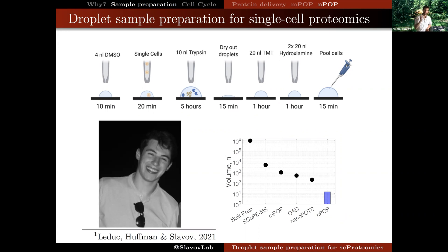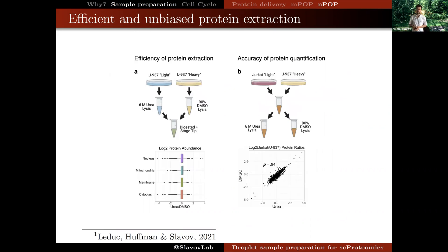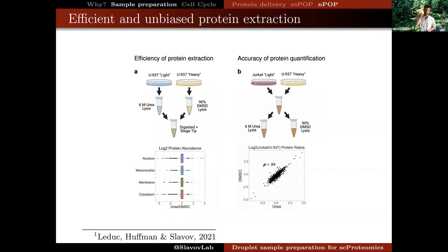While this method allows us to use very small volumes down to a few nanoliters to prepare samples from single cells, it's not immediately clear that it's going to work, so Andrew did a number of controlled experiments to evaluate it. First, we wanted to evaluate whether lysis with DMSO would be as efficient as lysis with well-established methods such as urea. Using an experimental design similar to Harrison Specht's, Andrew found that DMSO is able to extract proteins from different cellular compartments very efficiently, with relative protein levels consistent with those estimated from samples prepared with urea.